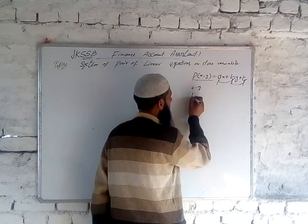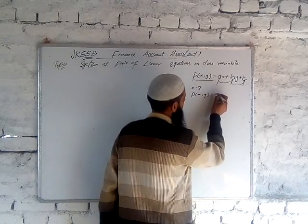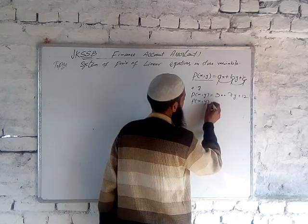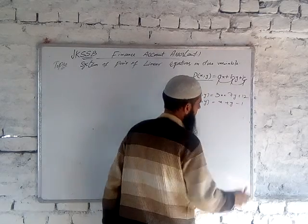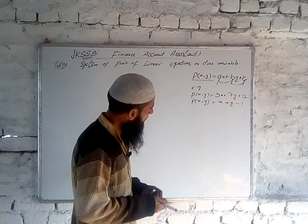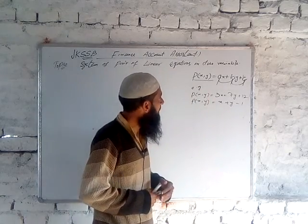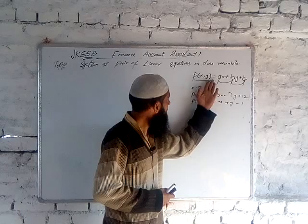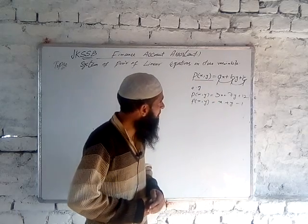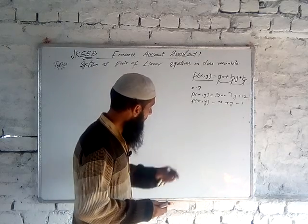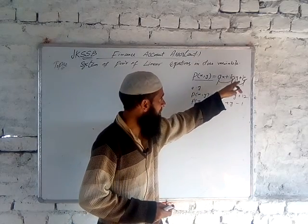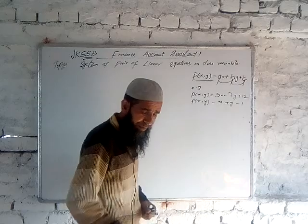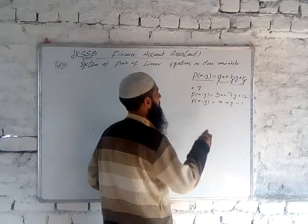Examples of linear polynomials in two variables: p(x, y) = 3x + 7y + 12, and p(x, y) = x + y − 1. Since a, b, and c are real numbers and real numbers are infinite, we get an infinite number of linear polynomials in two variables.